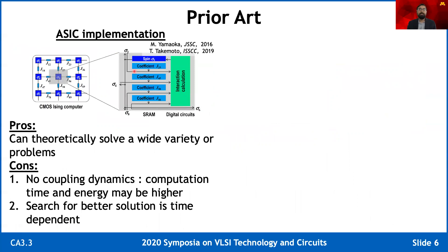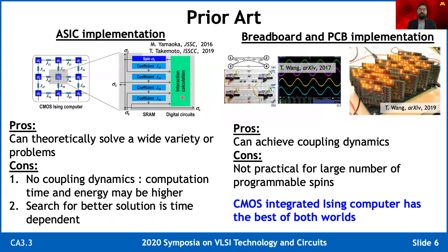This brings us to CMOS. CMOS is still the best-known technology for computation. There are some proposals that implement the Ising model using digital logic — for example, where spins are represented using SRAM memory and interactions happen in the digital domain. However, these systems do not have true coupling dynamics, so they are more deterministic and may require additional time and energy to emulate the Ising model. There are also other proposals where CMOS oscillators are coupled with resistors to achieve coupling dynamics, but these use standalone devices which are not very practical — for example, a breadboard implementation with 4 spins and a PCB-based implementation with 240 spins. Hence, an integrated Ising computer that emulates coupling dynamics would have the best of both worlds.